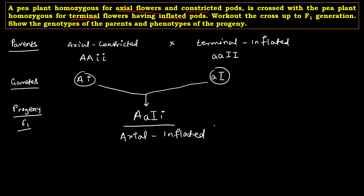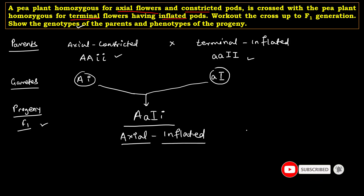The phenotypic expression of this F1 progeny is axial position of the flower and inflated pods. We have worked out the cross up to F1 generation. The genotype of the parents is capital A, capital A, small i, small i and small a, small a, capital I, capital I respectively. The phenotype of the progeny is axial flower with inflated pods, and the genotype is capital A, small a, capital I, small i.